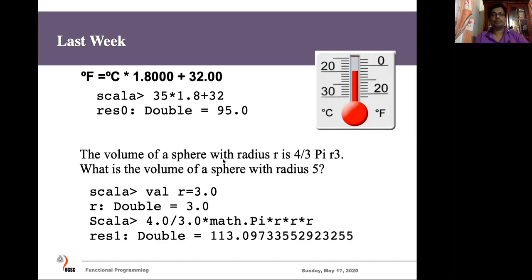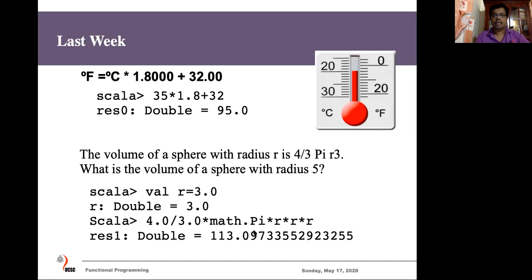Similarly, when you take the problem of calculating the volume of a sphere with radius R, there is an equation for that. We can assign some values and use them in our code. For example, at the Scala prompt I define a value R as radius 3, then type 4 divided by 3 multiplied by math.Pi and R cubed to get the answer. In Scala there is a library called math that has the value Pi, accessible using math.Pi.